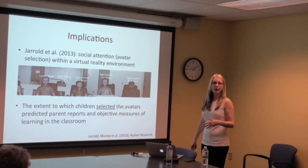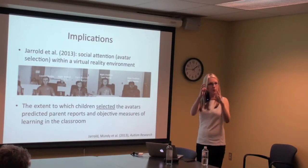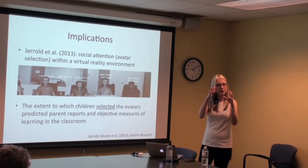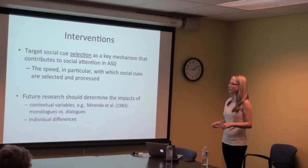This needs to be explored more — both the selection process and how we use cues once we've selected them. This research suggests that targeting cue selection — selection of social information as a key mechanism contributing to social attention in autism — might be one way to focus intervention efforts. In particular, the speed with which social cues are selected and processed could be explored as an intervention target.